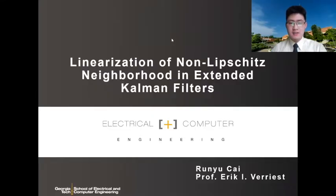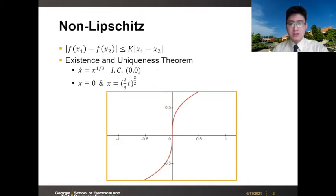Greetings, my name is Ran Yukai, and it's a pleasure to present to you linearization of non-Lipschitz neighborhoods in extended Kalman filters. My mentor is Professor Eric Ferris, whose guidance and contribution I cannot appreciate more. First of all, the term Lipschitz is mostly used in the phrase Lipschitz continuity, and it is defined for a function such that there exists a positive real constant k such that for all x1 and x2 the inequality here holds. In other words, for differentiable functions, the first derivative of the function stays finite. Now, non-Lipschitz is the lack of this property. For example, in the graph below, y equals x to the two-thirds power contains a non-Lipschitz neighborhood around x equal to 0, and this lack of the property introduces inconveniences when solving differential equations due to the existence and uniqueness theorem.